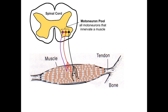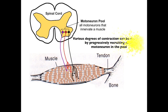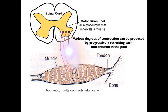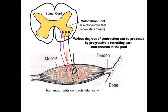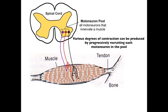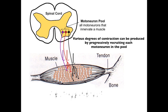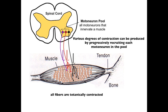It should also be apparent why various degrees of contraction can be produced by progressively recruiting each motor neuron in the pool. For example, when both the red and black neurons are activated, they will cause a tetanic contraction of the muscle fibers that comprise the motor units of the red and the black motor neurons. Similarly, if all three motor neurons fire, all fibers in the muscle will contract tetanically, and the entire muscle will generate its maximal or tetanic force.